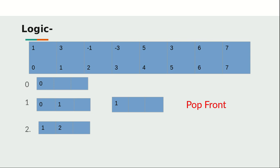Let's walk through deque snapshots at each step. At index zero, the deque is empty so we push zero. At index one, the value is three — which is higher than the value at index zero, so zero is of no use. We remove it and move index one to the front. At index two, the value is minus one which is less than three, so we just push index two into the deque.